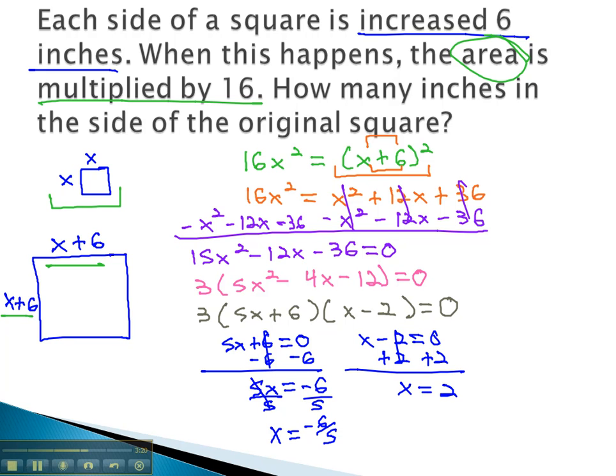It would not make sense to have the length of a square equal to a negative number. The only number that can possibly work in this case is x equals 2. How many inches are in the side of the original square? 2 inches in the side of this original square.